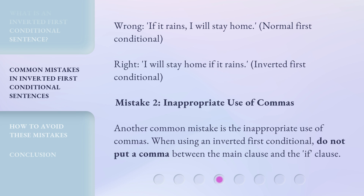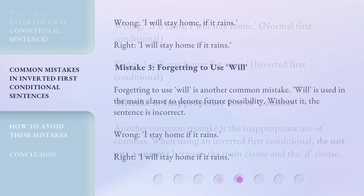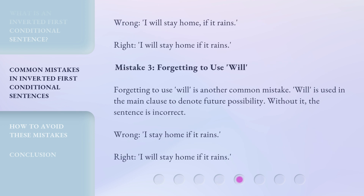Mistake 2: Inappropriate use of commas. Another common mistake is the inappropriate use of commas. When using an inverted first conditional, do not put a comma between the main clause and the if clause. Wrong: 'I will stay home, if it rains.' Right: 'I will stay home if it rains.'